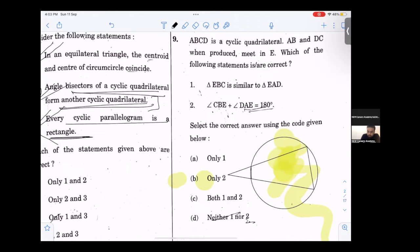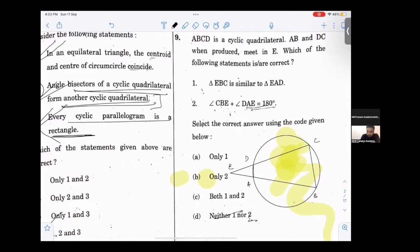AB, CD produced meet at E. If we give it a name, suppose it is 60, then it will be 30. If it is 30, for example, if we give it 70, then it will be 110.